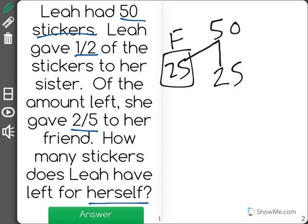Of the amount left, in this case it would be 25, Leah then gave two out of every five, two-fifths, to her friend. Oops, it looks like at the top she gave those to her sister.